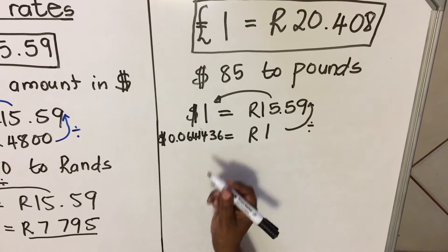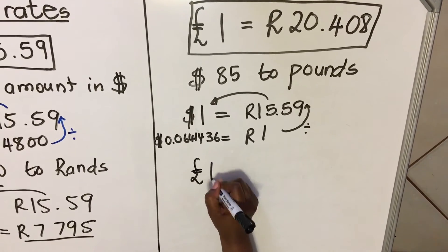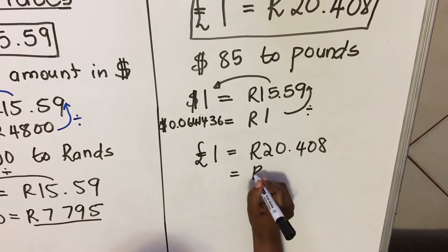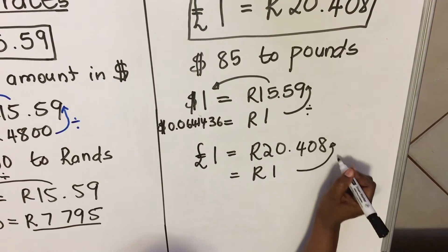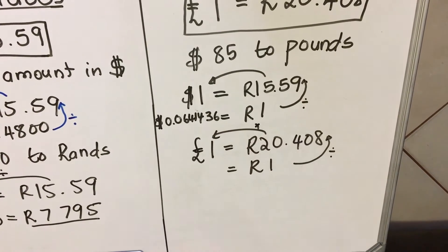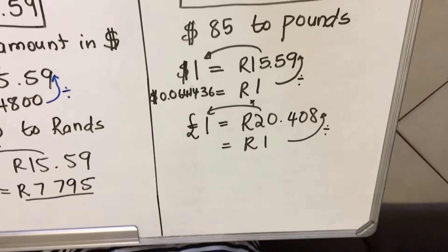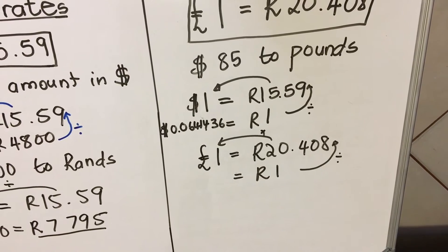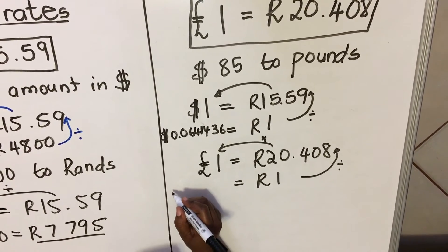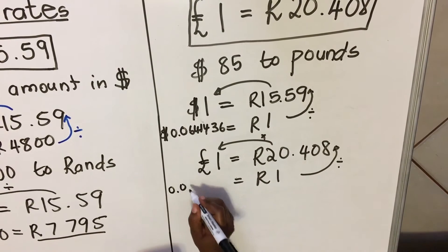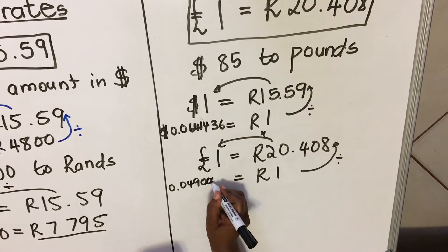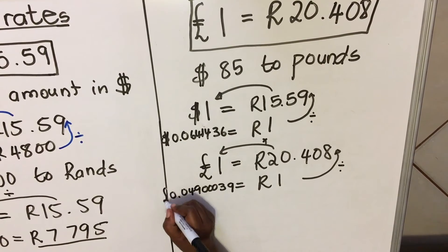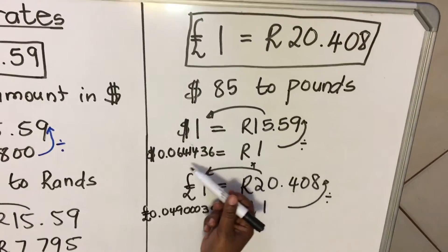Now find the pound equivalent. Write the scale: one pound equals 20 rand 41 cents. To find one rand, apply the rule again: divide first, then multiply. So: one divided by 20.41, multiplied by 1. So one rand equals a certain number of pounds.